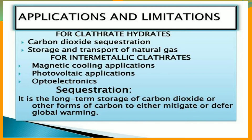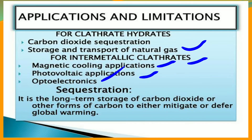Regarding applications and limitations of clathrates: clathrate hydrate compounds are used for carbon dioxide sequestration and for the storage and transportation of natural gases. For intermetallic clathrates, they are used in magnetic cooling applications, photovoltaic applications, and optoelectronics. Sequestration means the long-term storage of carbon dioxide or other forms of carbon to mitigate or defer global warming.